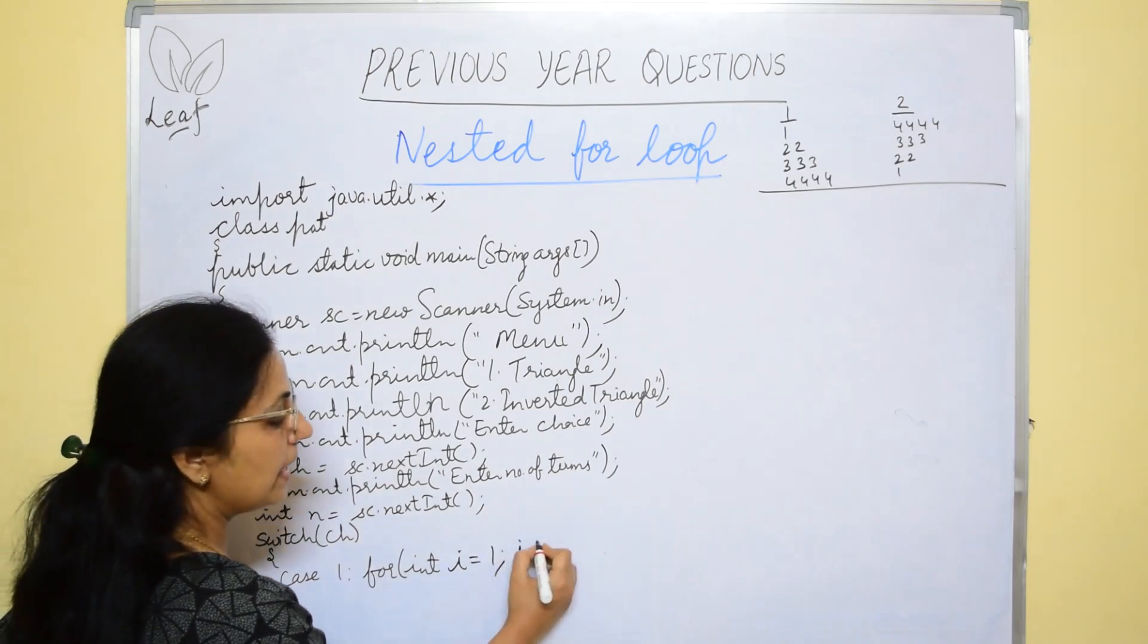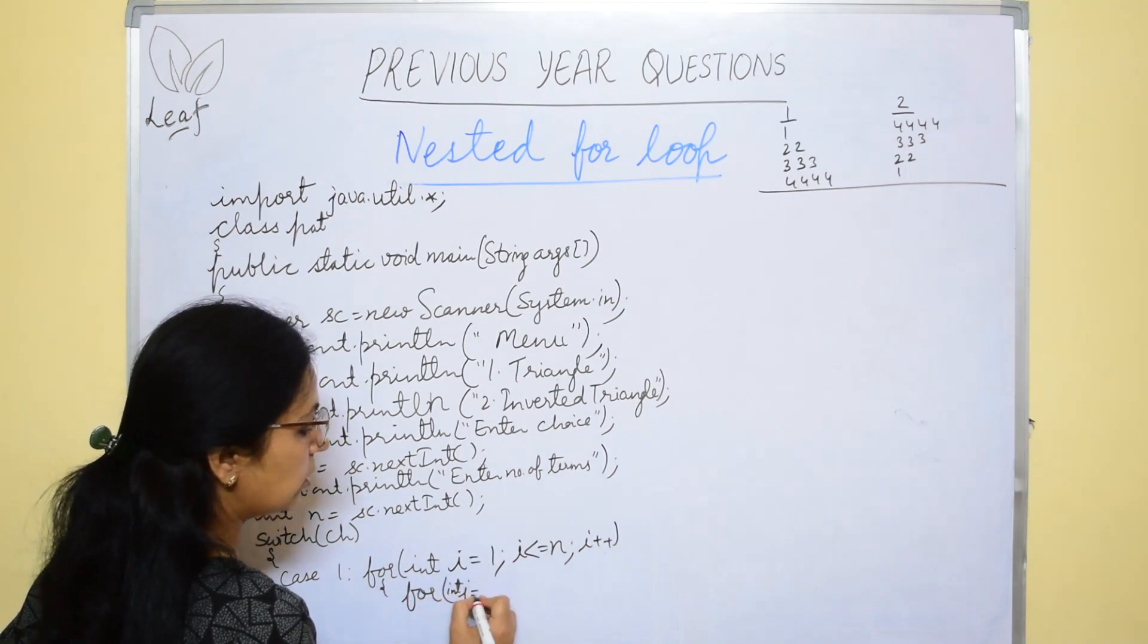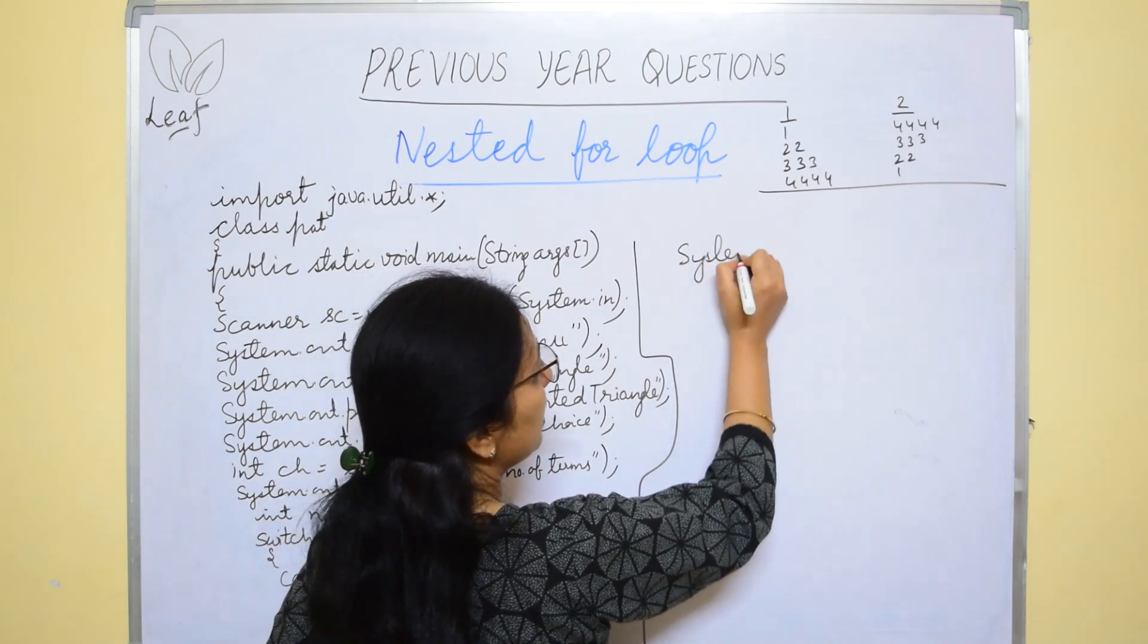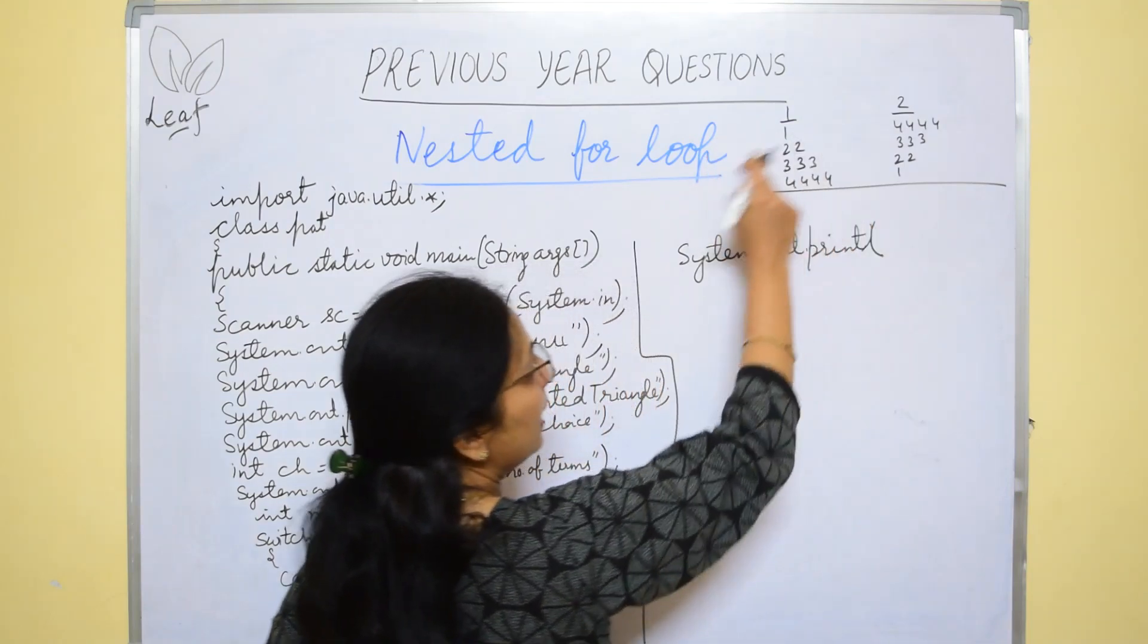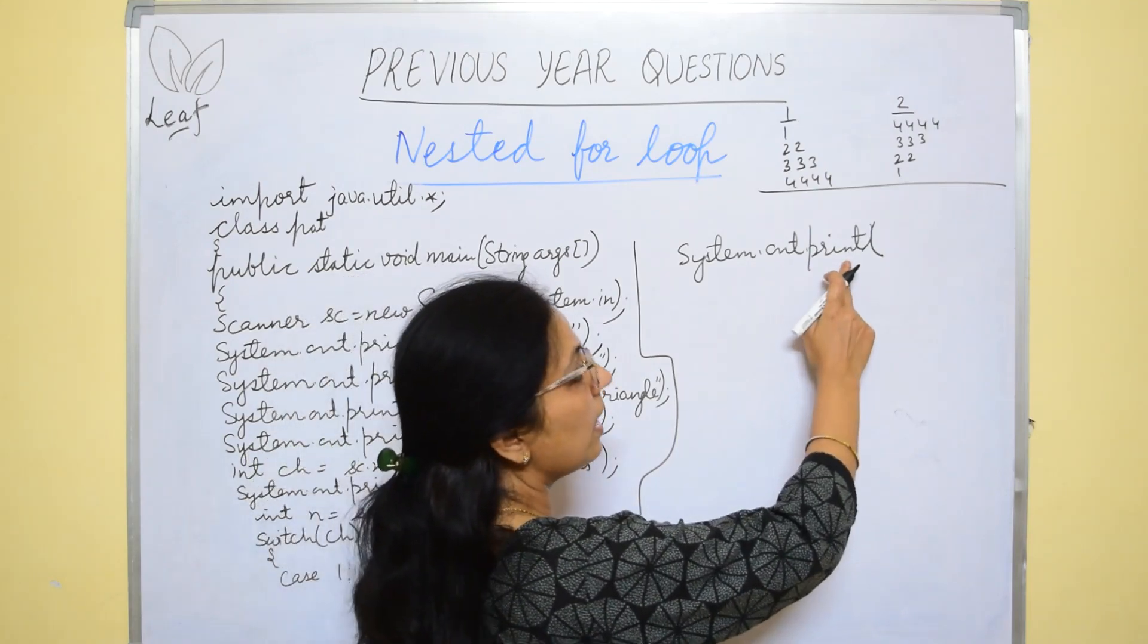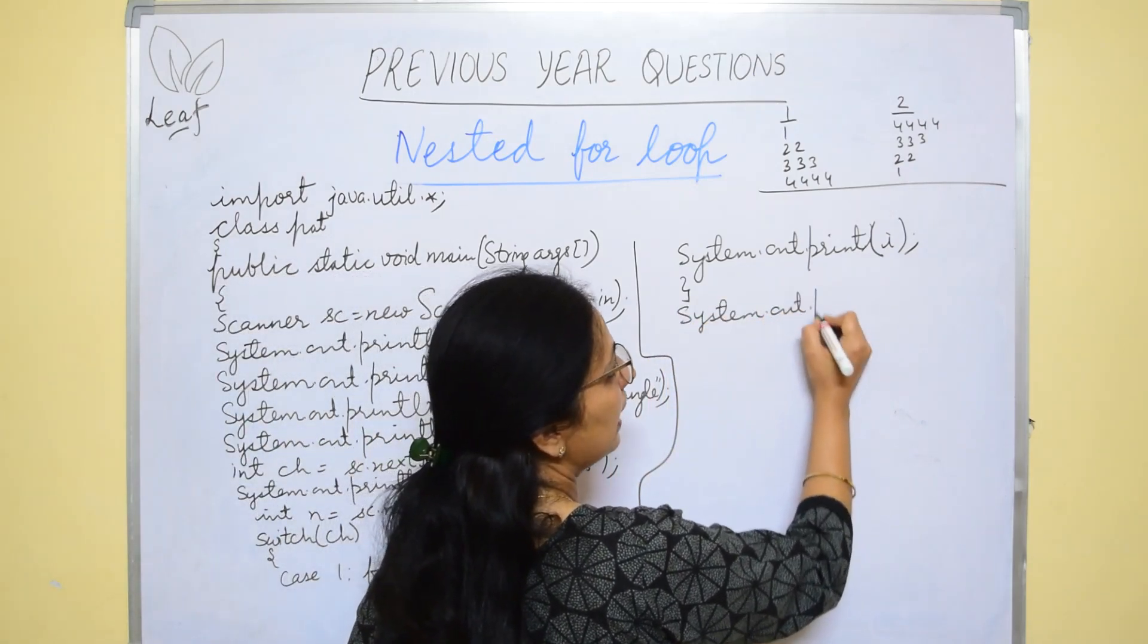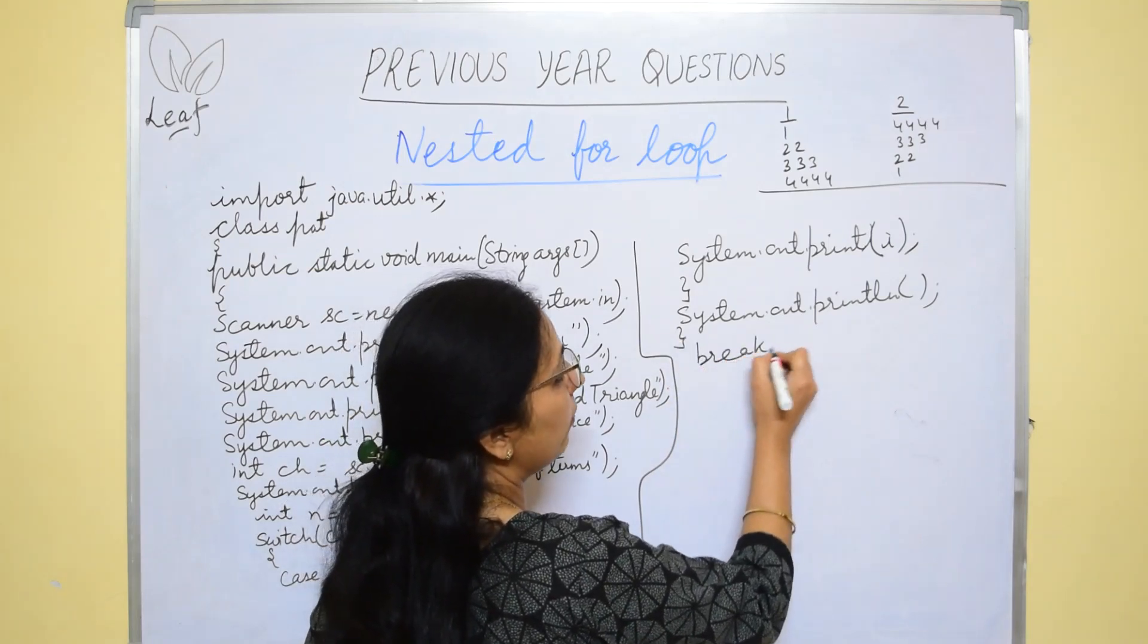So we will be taking the loop i equals to 1 and how many rows we want depending upon the number of terms entered by the user. So that is n. So i less than equals to n i plus plus and for j int j equals to 1 j less than equals to i j plus plus. After that you will be using print statement and the printing variable will be i variable not j. And here one entire row we want the same line and then once the row is over then we want to shift to the next line. So in the inner loop you will be using print, not print ln. After the inner loop is over then we will use a statement system.out.println to bring the cursor to the next line. After this we will close the outer for and then we will give break statement.